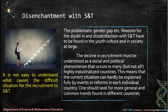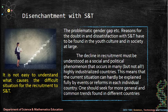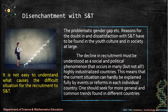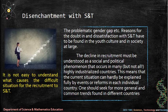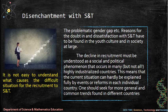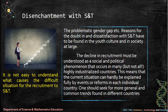Disenchantment with science and technology. It is not easy to understand what causes the difficult situation for recruitment to science and technology, nor the problematic gender gap. Reasons for doubt and dissatisfaction with science and technology have to be found in youth culture and in society at large. The decline in recruitment must be understood as a social and political phenomenon that occurs in many, but not all, highly industrialized countries. One should seek more general and common trends found across different countries.